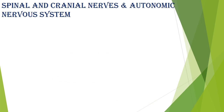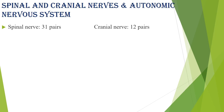Regarding the linkage between spinal/cranial nerves and the autonomic nervous system: the spinal nerves come from the spinal cord and the cranial nerves come from the cranium part of the skeleton. We have 31 pairs of spinal nerves and 12 pairs of cranial nerves.